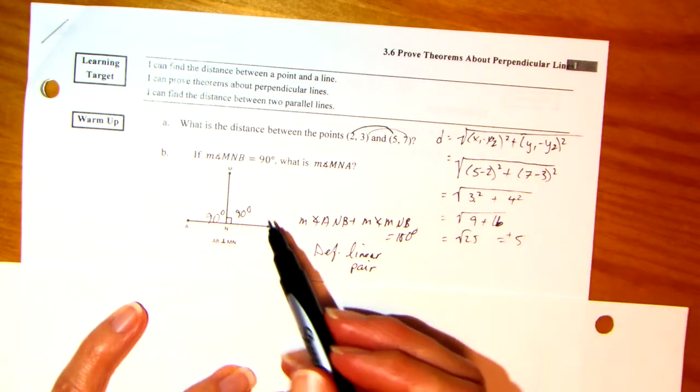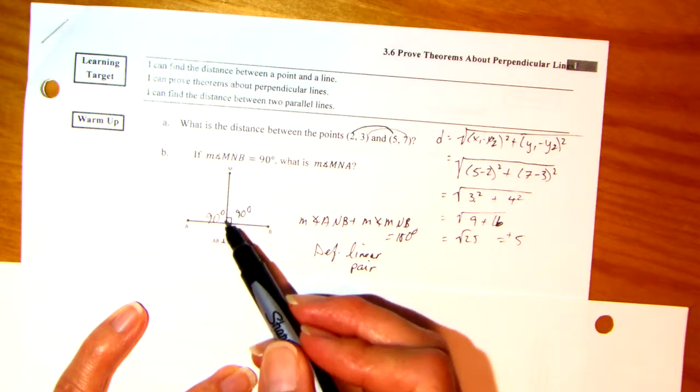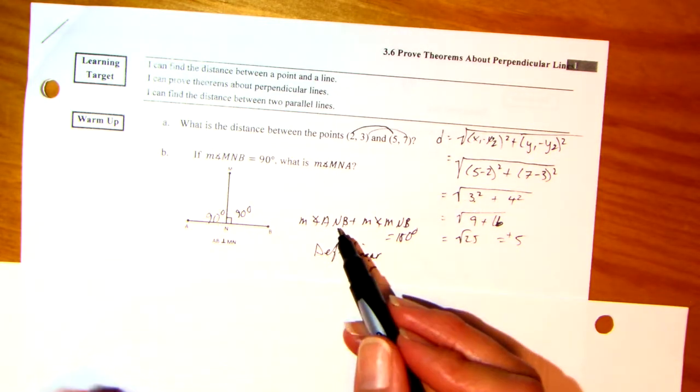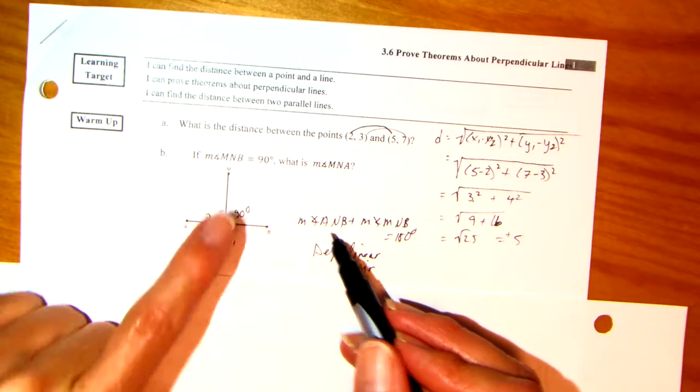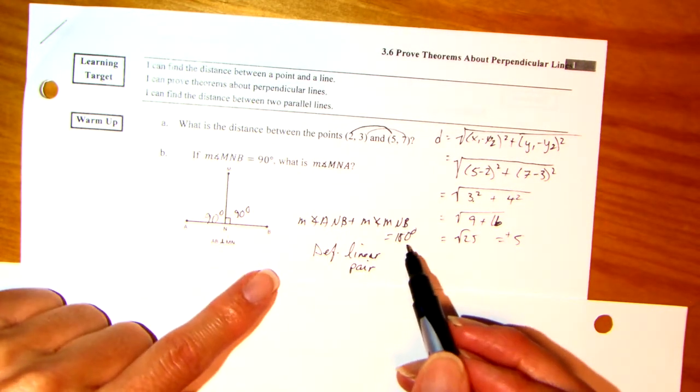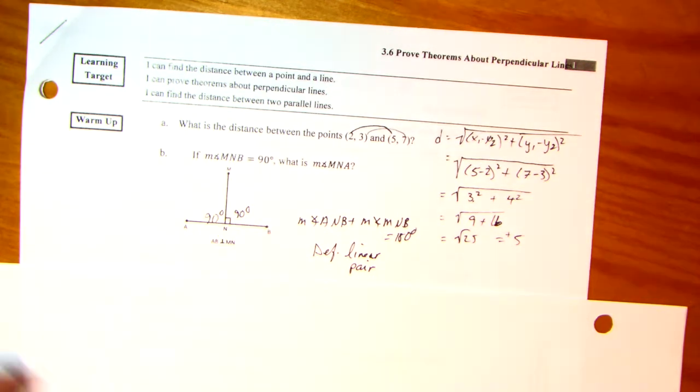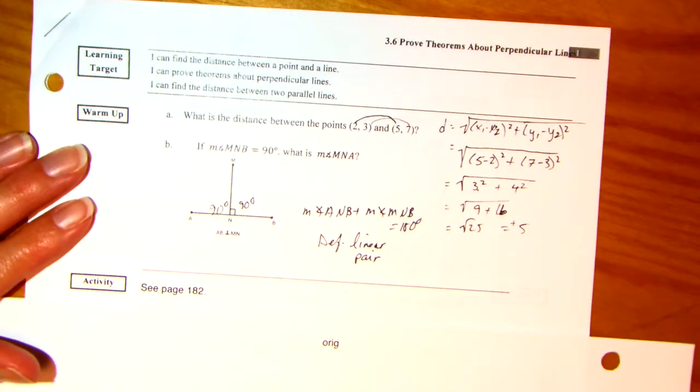All right, the next one. Measure of angle M and B is 90. What can you tell me about this angle? Well, the measure of A and B and M and B is 180. That's the definition of a linear pair. Well, if this one's 90, that one has to be 90. So far, so good?